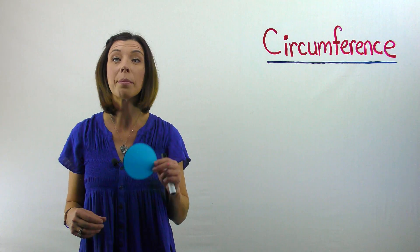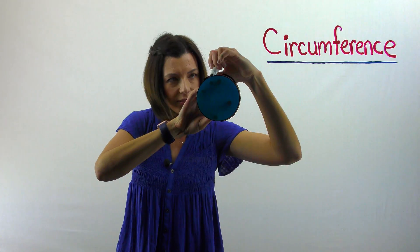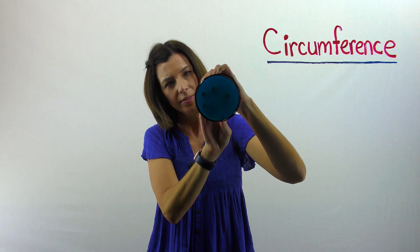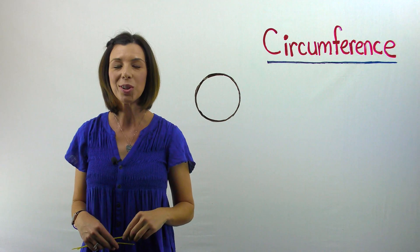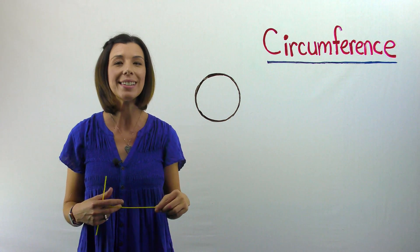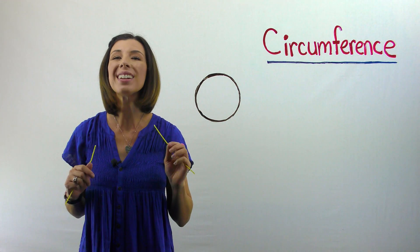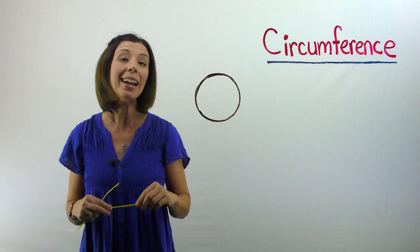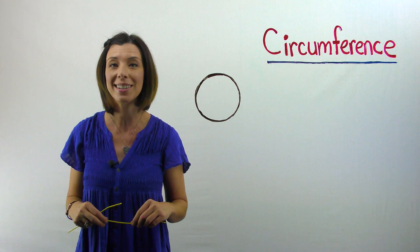The first thing I'm going to do is I'm going to trace my circle. Now that you've got your circle traced, I want you to take your wiki stick, and we need to measure the diameter as closely as possible, and cut our wiki stick to be the diameter.